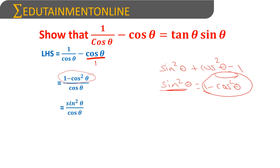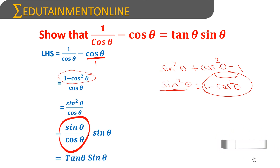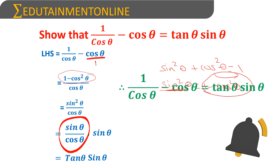Now we can split sin²θ into sinθ × sinθ. So we can write it as sinθ/cosθ × sinθ. Since sinθ/cosθ is tanθ, this gives tanθ × sinθ. Therefore, 1/cosθ − cosθ = tanθ·sinθ.